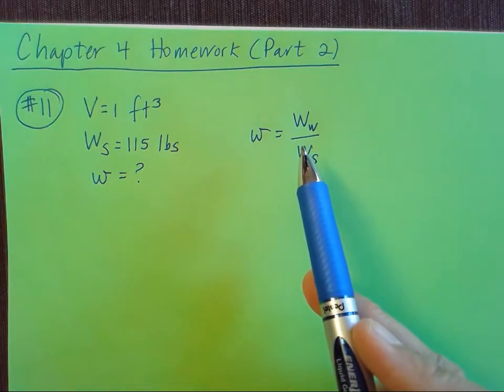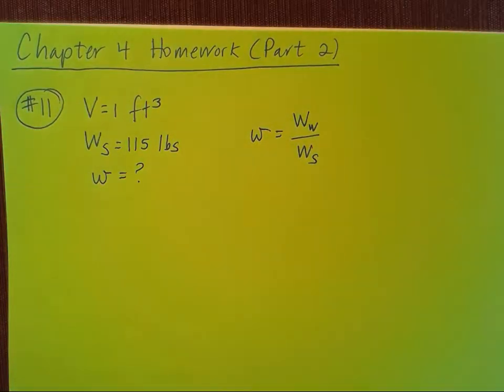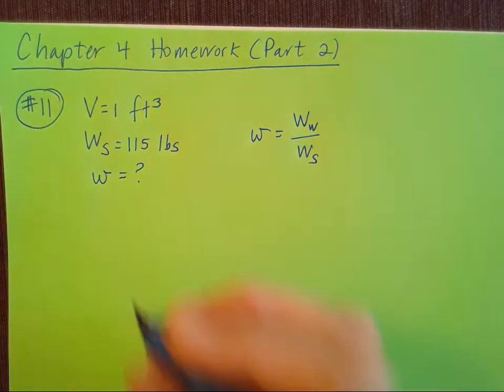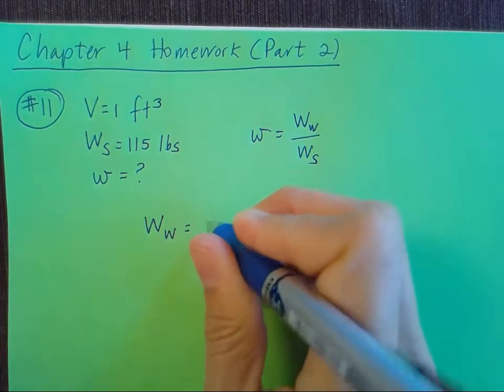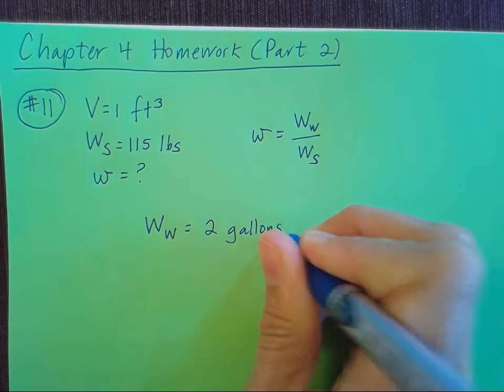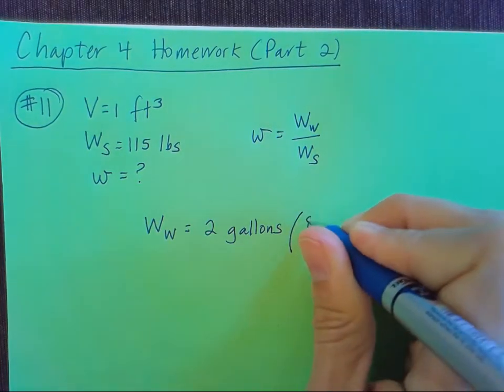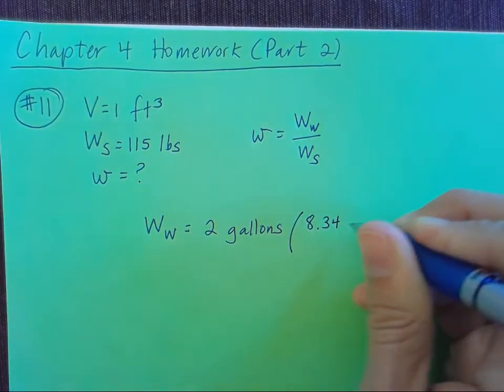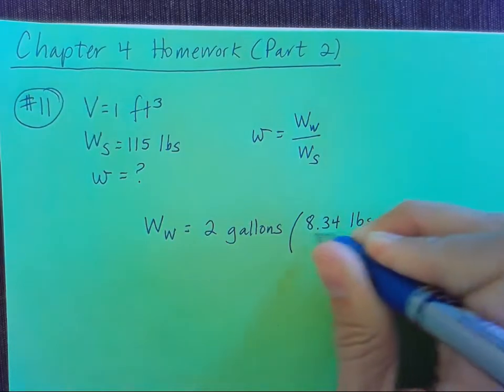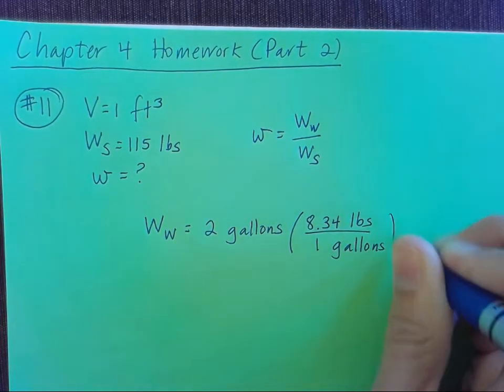Well, I'm told that the sample is being mixed with 2 gallons of water. So we can figure out our weight of the water from that. It's going to be my 2 gallons, and then I'm told that there's 8.34 pounds in a gallon. So I'm going to take that and multiply it by 8.34 pounds in 1 gallon to figure out the weight of the water in pounds.